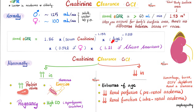Conversely, creatinine clearance decreases in extremes of age — the very young and the very old. If the kidney is not being perfused, we call this pre-renal azotemia, such as cases of hemorrhage, third-degree burns, any extracellular fluid volume depletion like severe vomiting or diarrhea, or even severe dehydration. Renal artery stenosis causes include atherosclerosis, fibromuscular dysplasia, or an embolus in the renal artery.